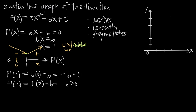Our first derivative was 6x - 6. The second derivative f''(x): the derivative of 6x is 6, and the derivative of -6 is 0. So our second derivative is just 6. Normally, if there were still a variable in the second derivative, we would set it equal to 0 and solve for x to find inflection points. But here, there's no x variable remaining in the second derivative, so the second derivative is always positive — always greater than 0.